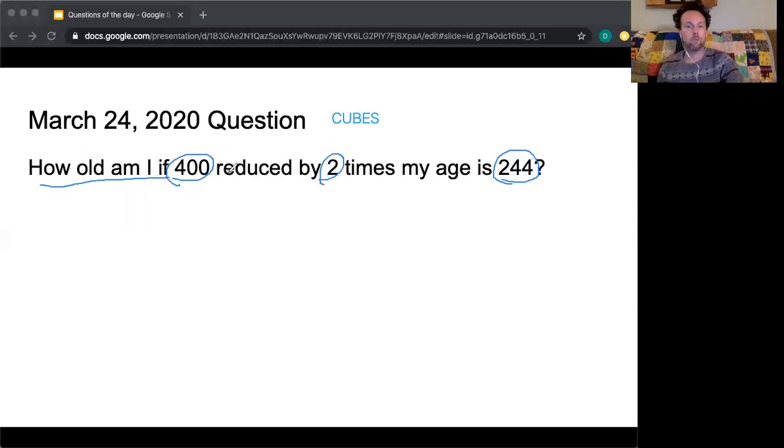Next up is B, box around keywords: reduced by, two times. So how old am I if 400 reduced by two times my age is 244? I know that reduced by means I'm taking something away, so I'm subtracting. Then two times, that's one of our keywords for multiplication. So I've got 400 reduced by two times my age, so I'm actually just going to make my age x equals 244.